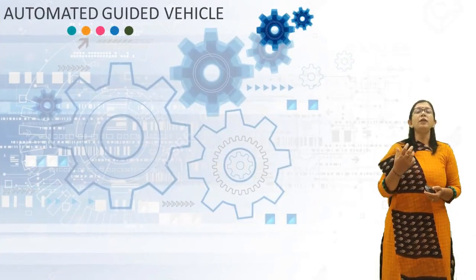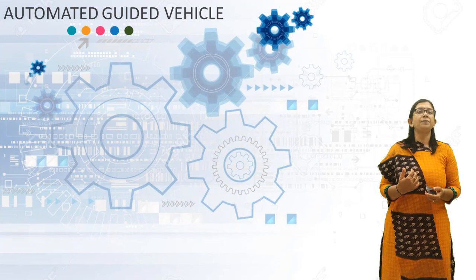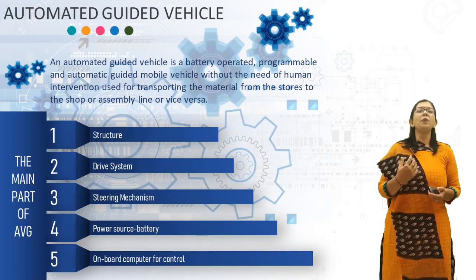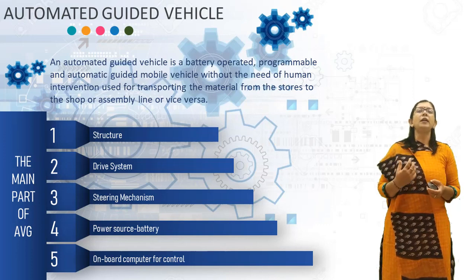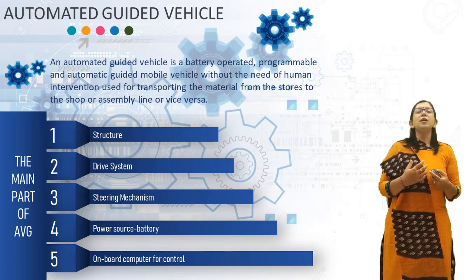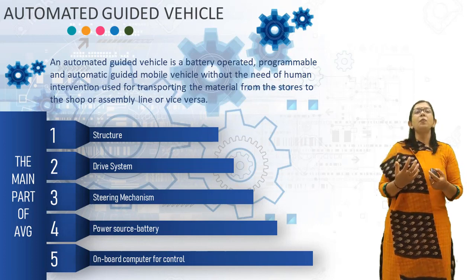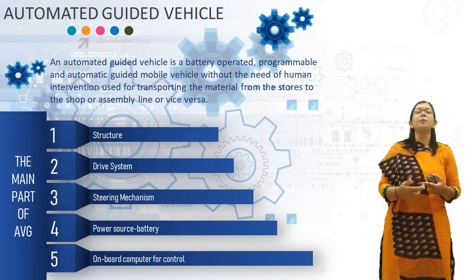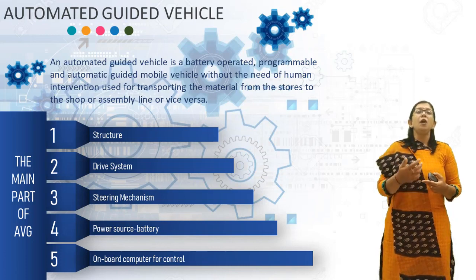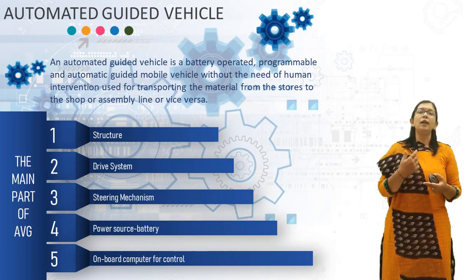First of all, what is an Automated Guided Vehicle? An Automated Guided Vehicle is a battery-operated, programmable, and automated mobile vehicle that operates without the need of human intervention, used for transporting material from store to the shop or SMD line or vice versa. Such vehicles are equipped with automatic guidance equipment, either electromagnetic or optical, and are capable of following a prescribed guide path and stopping at locations as per programming without the help of a driver or operator.